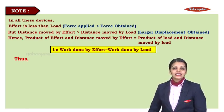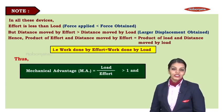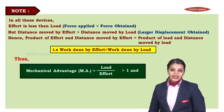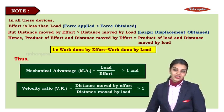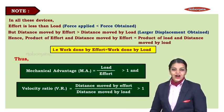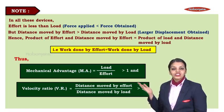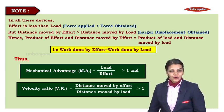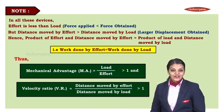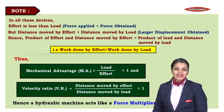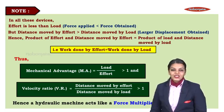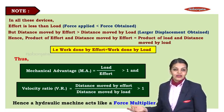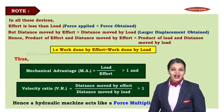Since effort is less than load, load divided by effort is greater than 1, meaning mechanical advantage is greater than 1. The velocity ratio — distance moved by effort divided by distance moved by load — is also greater than 1. Therefore all these machines act as force multipliers, and in any case where a larger force is required, a force multiplier such as any of these machines is used.